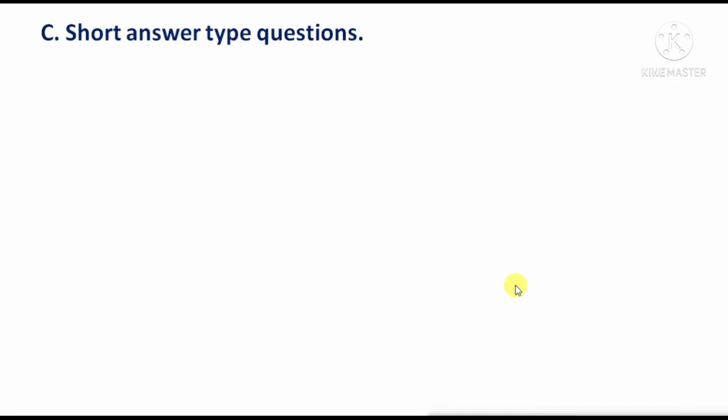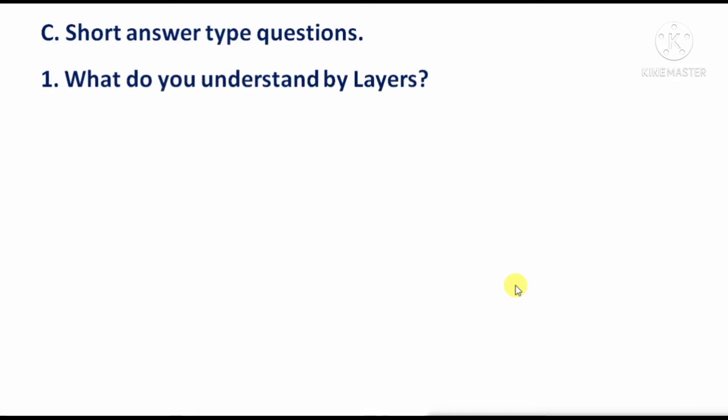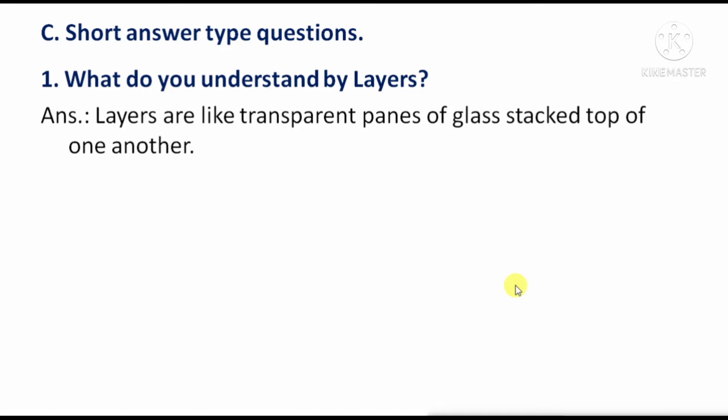Short answer type questions. First question: What do you understand by layers? Answer: Layers are like transparent panes of glass stacked on top of one another — means, layers are like transparent panes or sheets of glass placed one on top of the other.